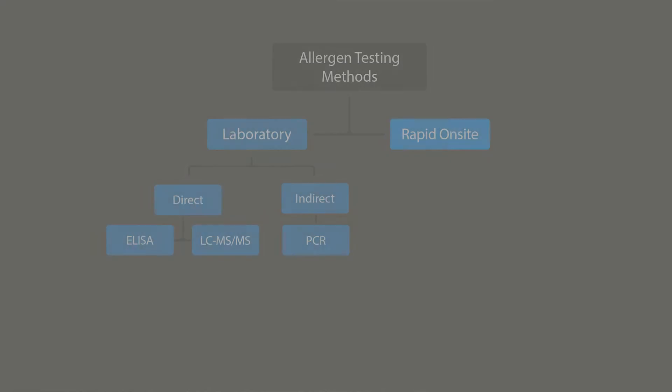Commonly used allergen detection methods can be divided into two groups: those that need to be done in a lab using specialized equipment, and those that can be performed on site using little or no specialized equipment. The lab-based methods can be further subdivided into direct and indirect methods.